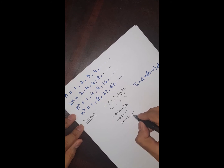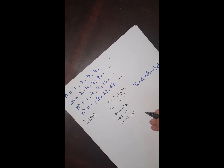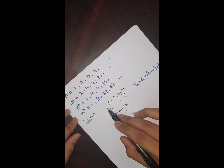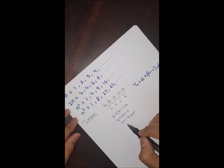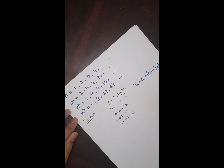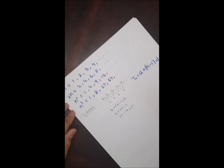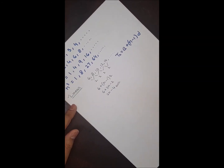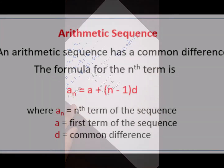You can check this: if you substitute n = 1 you get 6, and if you put n = 2 you get 8. So 2n + 4 is the nth term of this linear or arithmetic sequence.